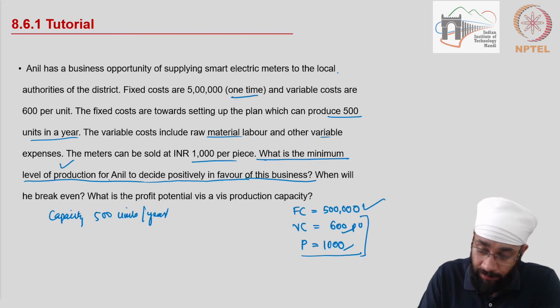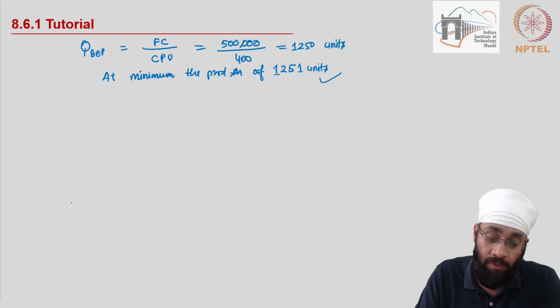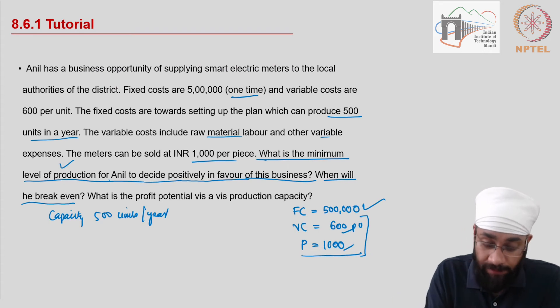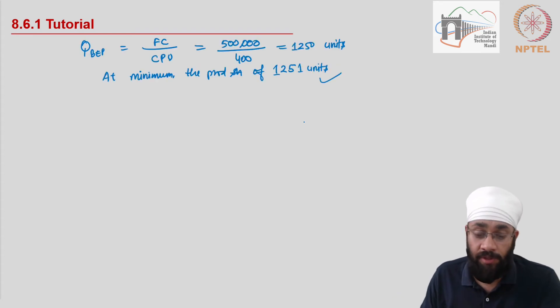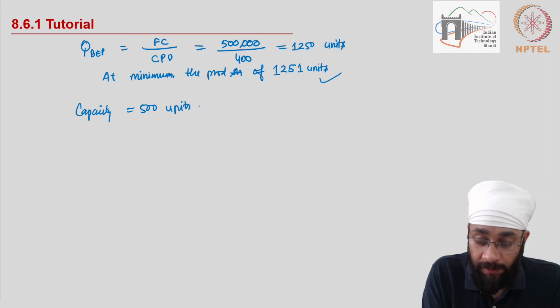The second is when will he break even? So what is the time when you can expect him to break even? If it is about time, then we have to look in terms of months or years. The production capacity is 500 units a year. The capacity is 500 units per year.